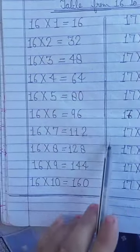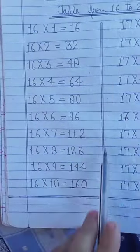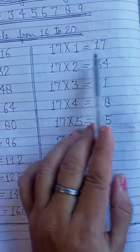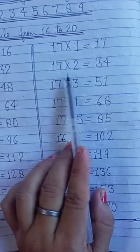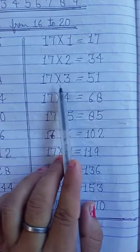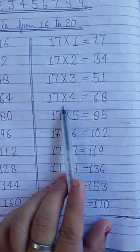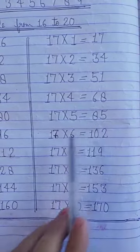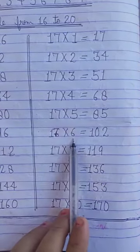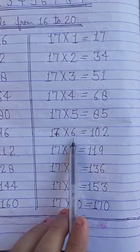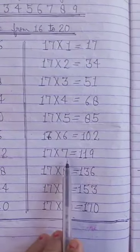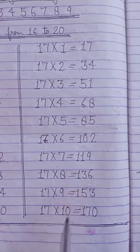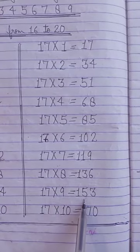Now after table of 16 you draw line, vertical line, two lines with the help of scale. Then you write table of 17. 17 ones are 17. 17 twos are 34. 17 threes are 51. 17 fours are 68. 17 fives are 85. 17 sixes are 102. 17 sevens are 119. 17 eights are 136. 17 nines are 153.